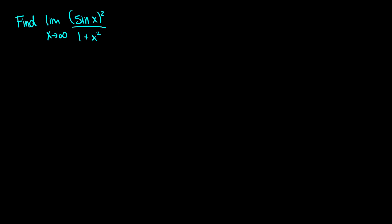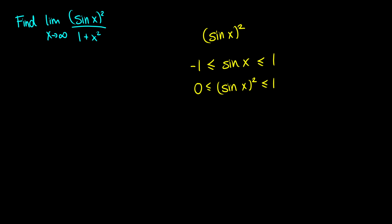Here's another example, but it's a little different because now we're introducing trig. You might ask: what is the limit as x approaches infinity of sin squared x? That's difficult — we don't know that yet. But here's what we do know: the values of sin x have to be somewhere between negative 1 and 1, because that's what the sine curve does — it bounces between negative 1 and 1. So when we square this, sin squared x is going to be between 0 and 1.